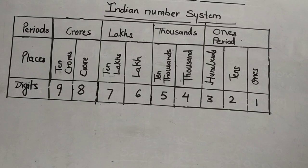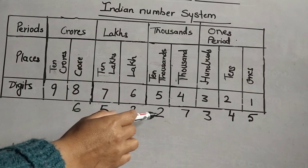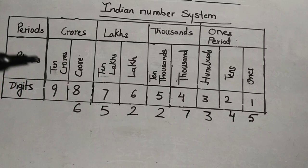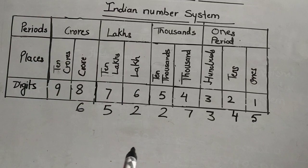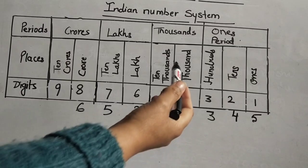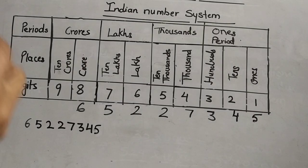Now let us learn to read and write numbers using the Indian number system or Hindu Arabic system. Look at this given eight-digit number: 6 5 2 2 7 3 4 5. Remember, commas are inserted from the right after three digits first, then after every two digits, because the ones period contains three digits and the rest of the periods have two digits each.